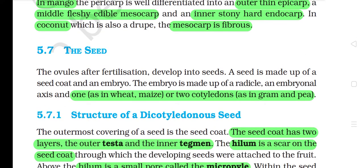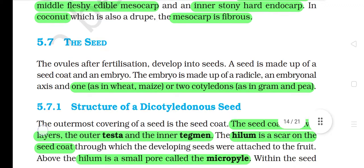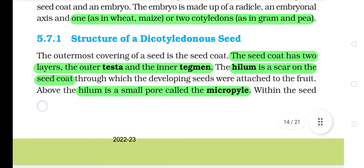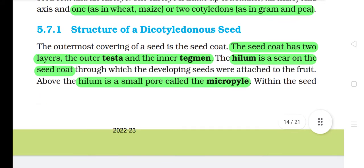5.7 The seed. The ovules after fertilization develop into seeds. A seed is made up of a seed coat and an embryo. The embryo is made of a radicle and an embryonal axis and one cotyledon, as in wheat and maize, or two cotyledons, as in gram and pea. 5.7.1 Structure of dicotyledonous seed.